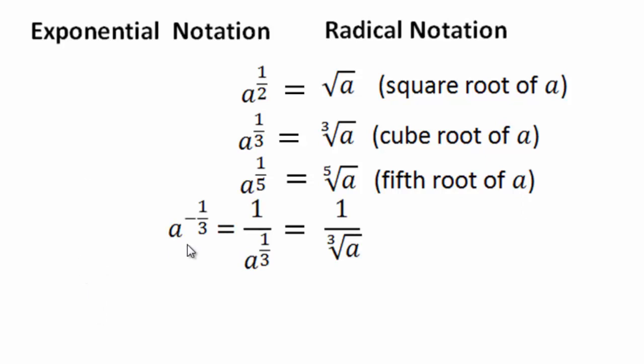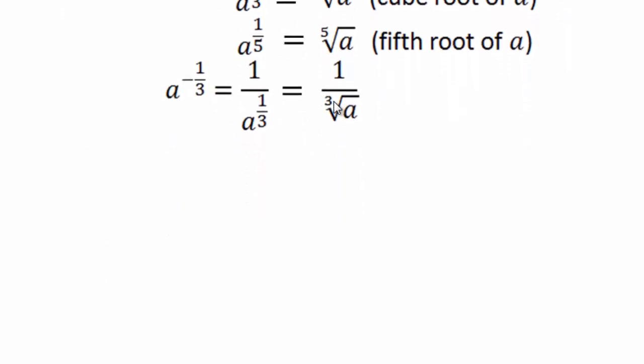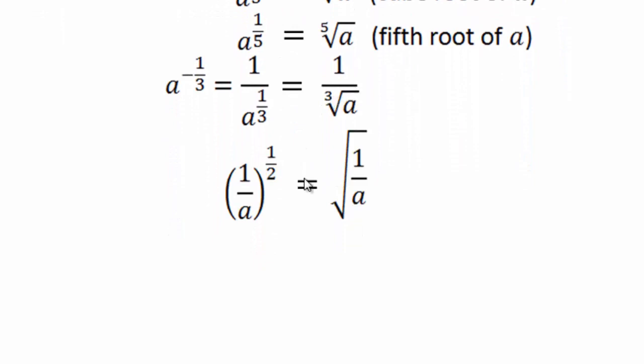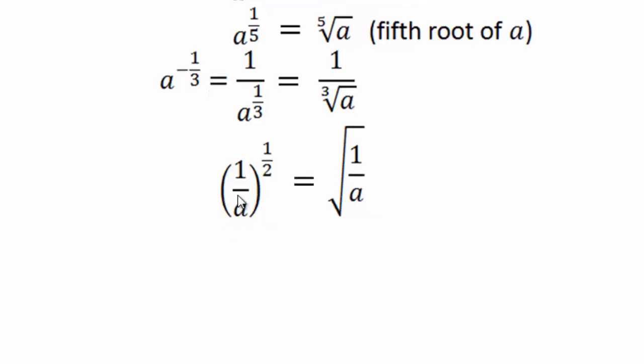Remember now, when you have a negative exponent, you make it a positive exponent first and then rewrite it. So if you have one over a to the power one-half, that means what? It's square root of one over a. It's the square root of the whole inside quantity, the base.